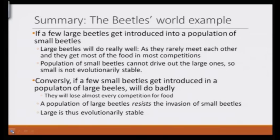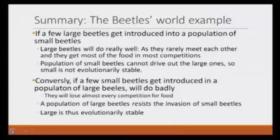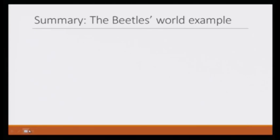Let us summarize what we have learned. If a few large beetles get introduced into a population of small beetles, large beetles will do really well because they rarely meet each other and they get most of the food in most competitions — since most competitions are with small beetles. So the population of small beetles cannot drive out the large ones, meaning small is not evolutionary stable. Conversely, if a few small beetles get introduced into a population of large beetles, they do very badly because most competition is with large beetles. So a population of large beetles resists the invasion of small beetles. Therefore, large is evolutionary stable.